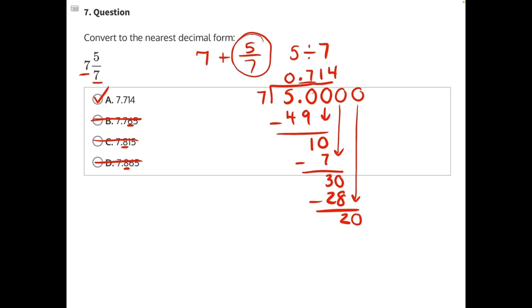However, all of our answers are dealing with only three decimal places. So we have 0.714. 7 plus instead of 5 sevenths, we now have the decimal form of 0.714. When we add these together, we get the number 7.714, making A our correct answer.